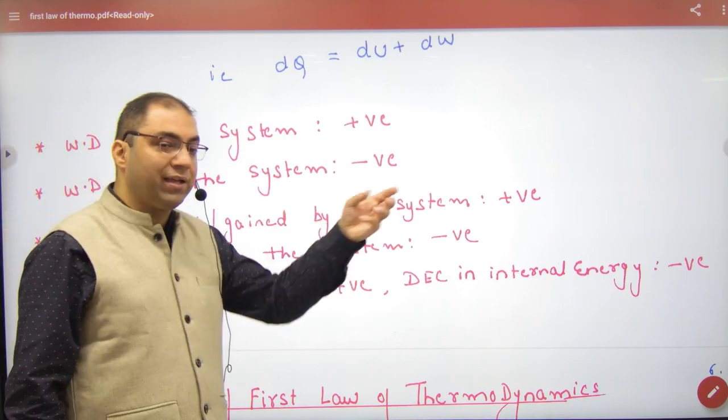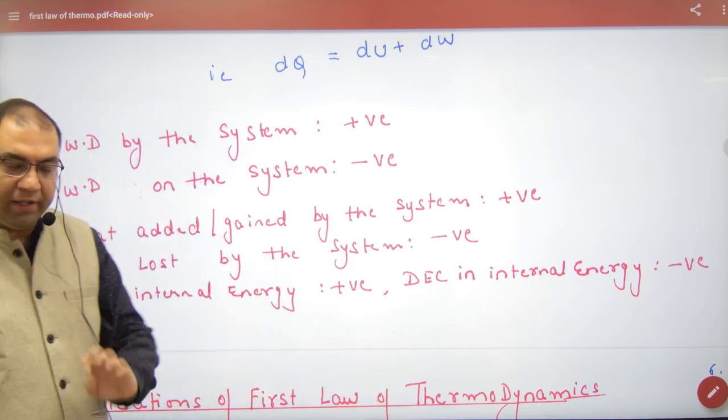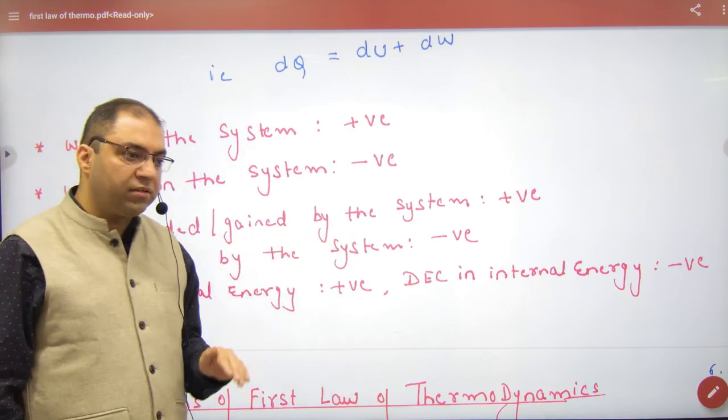Heat added or gained by the system: positive. Heat lost by the system: negative.